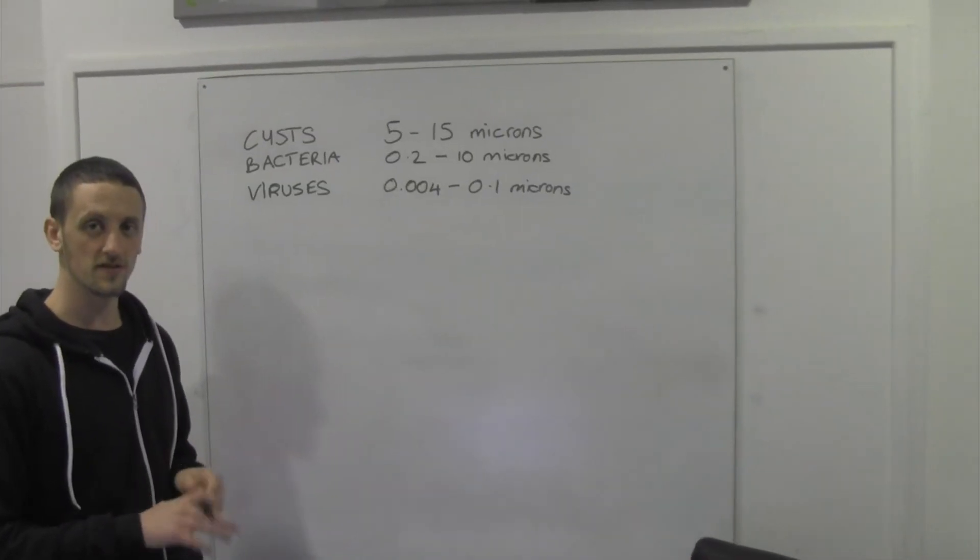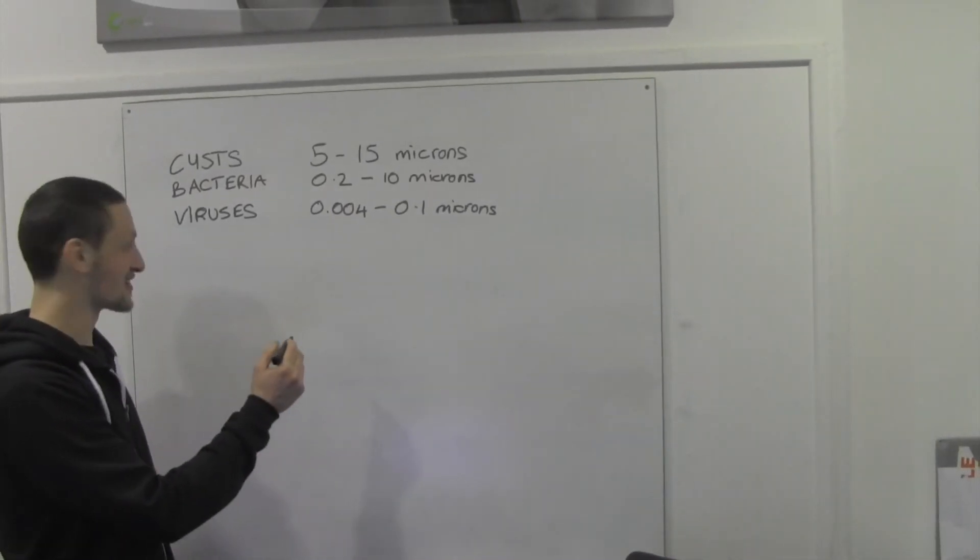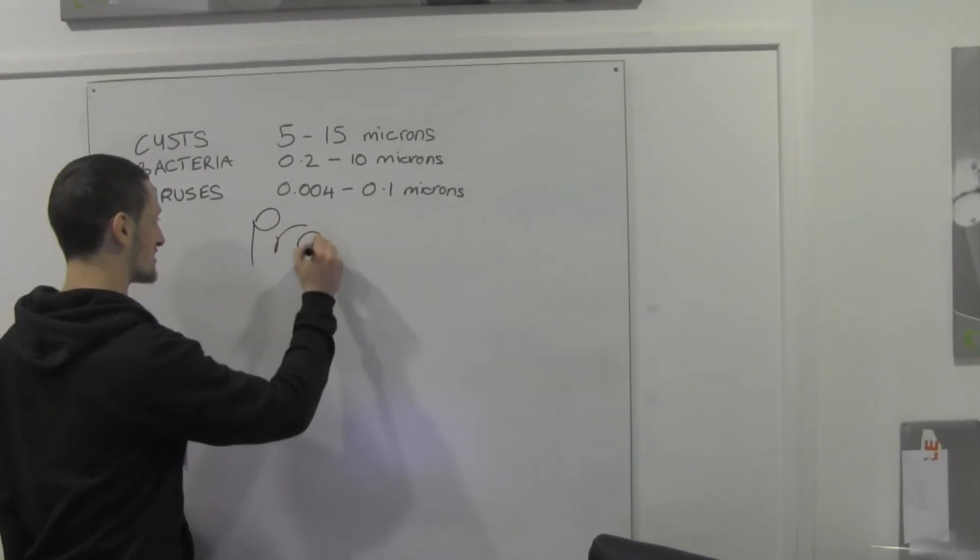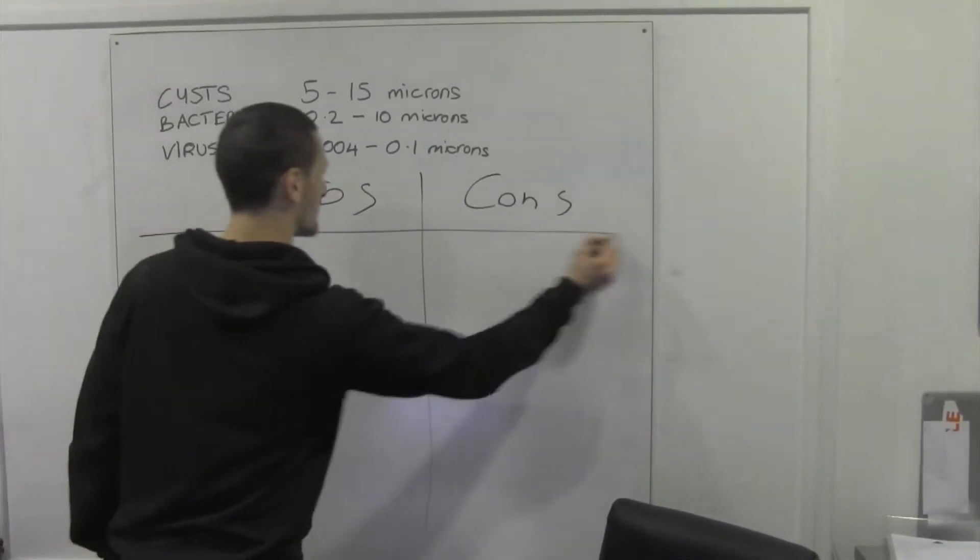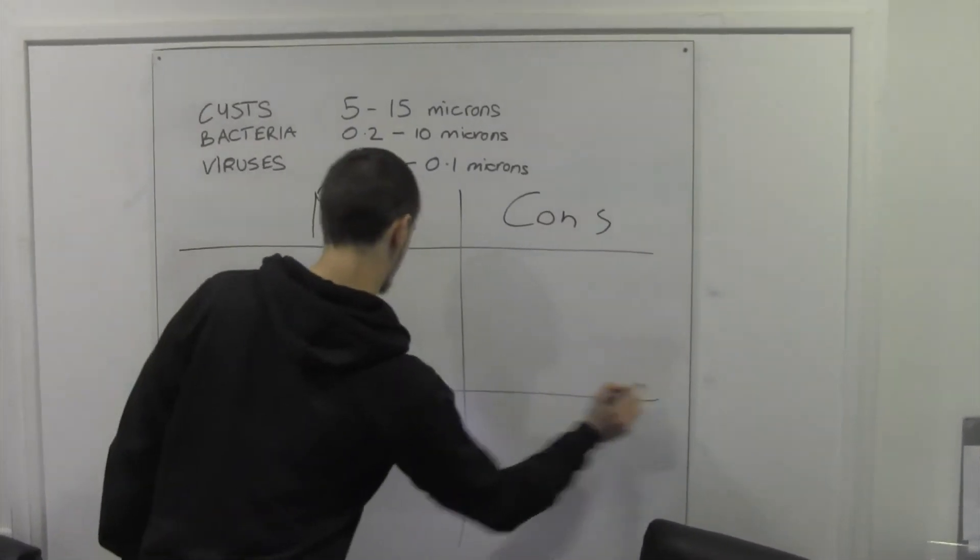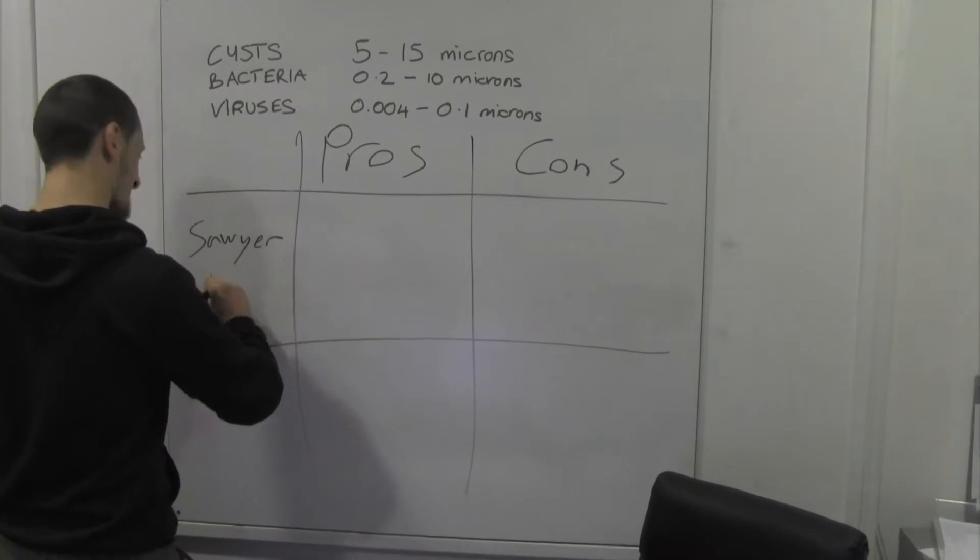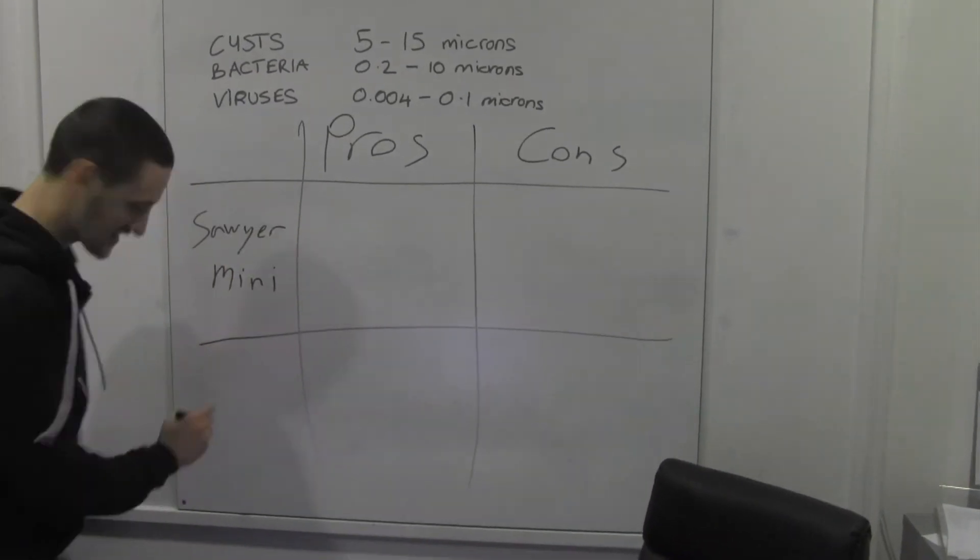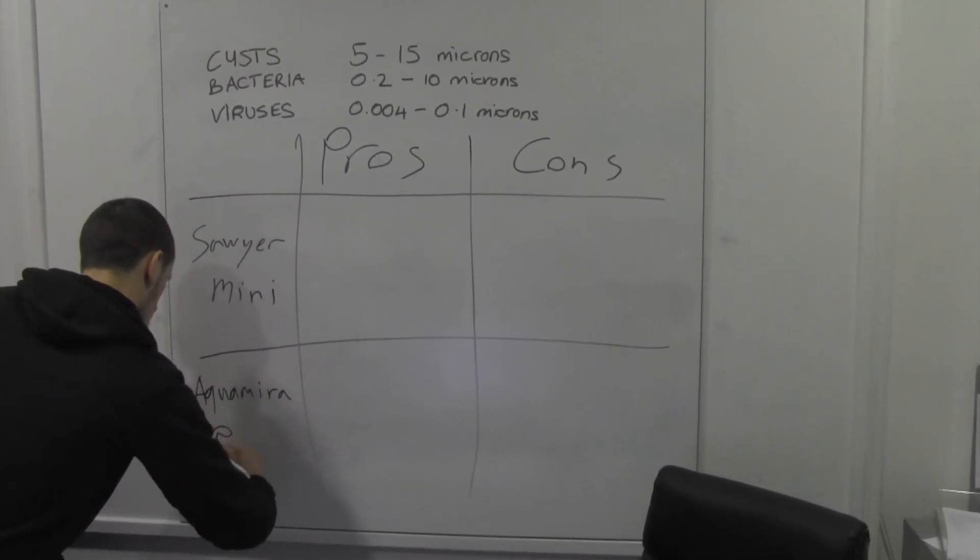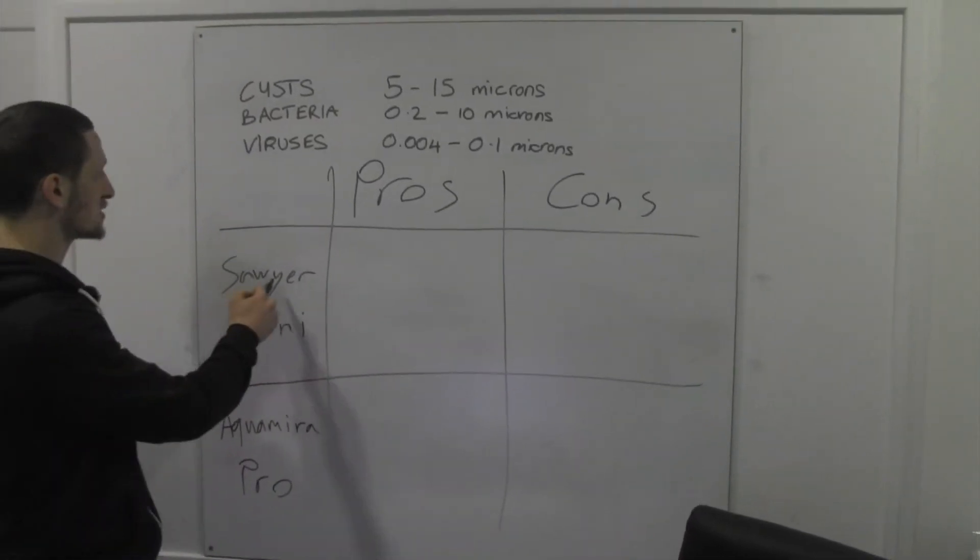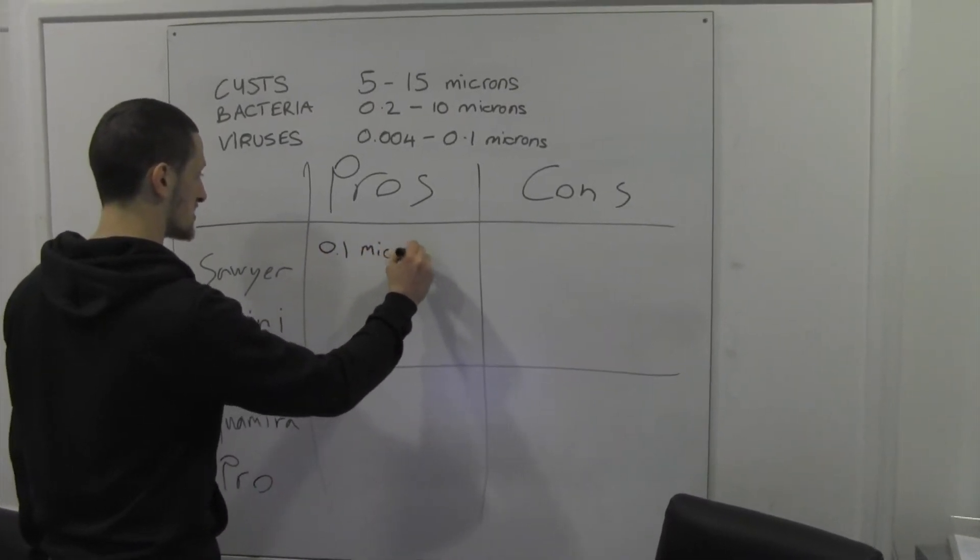Okay, we're going to have a look at the pros and cons of the two products now. So I'll try and arrange this so you can read it. My handwriting's horrific, so bear with me. So you've got pros, cons. I feel like Carol Vorderman. Okay, so the Sawyer Mini and Aquamira Pro.